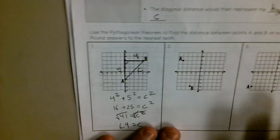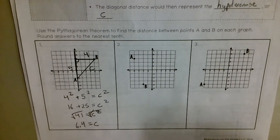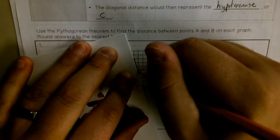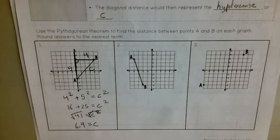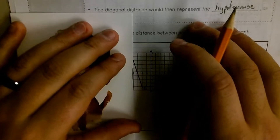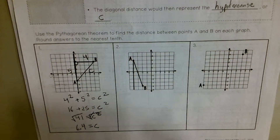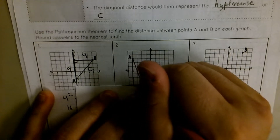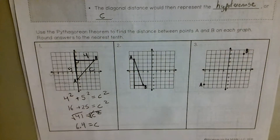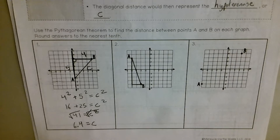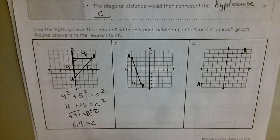Let's do one more together — number 2. You can start by connecting A and B; that's the distance we're trying to find. Then go to one of your points and draw a line straight up and down. I'm going to go to A and draw a line straight up and down. Then go to B and draw a line straight left and right. These should be on perfect grid lines. You can see right here I have my right angle. If I have a right triangle, I can use the Pythagorean Theorem to solve for any of these pieces.